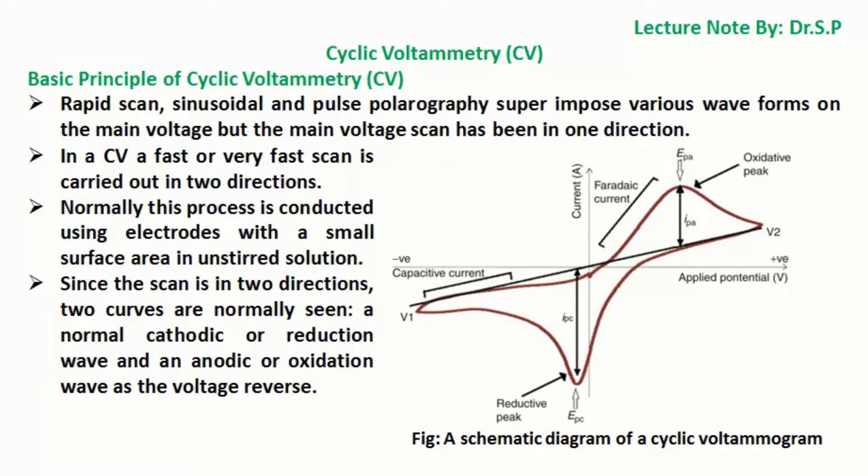In a CV, a fast or very fast scan is carried out in two directions. Normally this process is conducted using electrodes with a small surface area in unstirred solution. Since the scan is in two directions, two curves are normally seen: a normal cathodic or reduction wave and an anodic or oxidation wave as the voltage reverses.